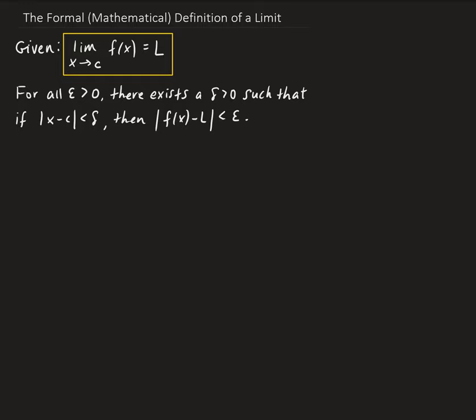Epsilon and delta are just Greek letters, and I'll be explaining those more later on. So let's try to understand this definition from an algebraic point of view.